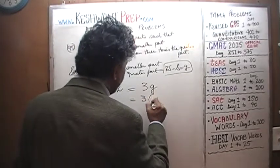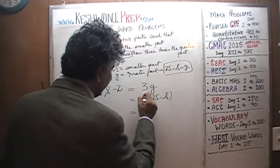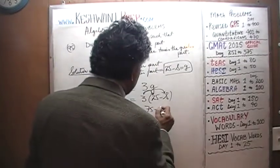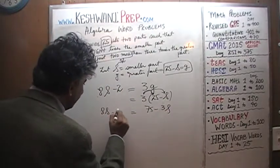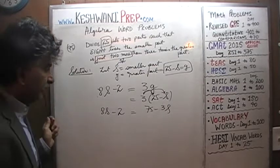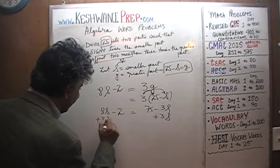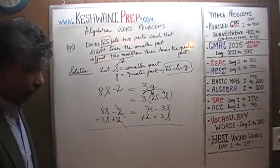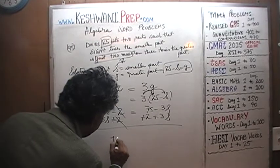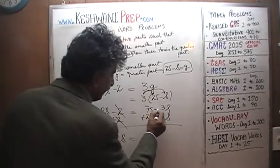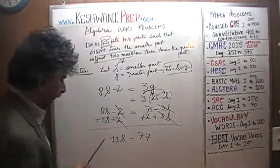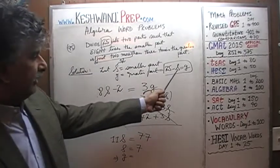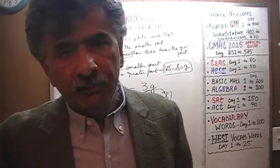So we have 3 times (25 minus S), which opens to 75 minus 3S, and on the other side we have 8S minus 2. Let's bring the 3S to the right side by adding 3S to both sides, and bring the 2 over by adding 2 to both sides. The negative 2 and positive 2 cancel. 8S and 3S give us 11S. The negative 3S drops out and we end up with 77. If 11S equals 77, then S must equal 7. And if S is 7, the greater part must be 25 minus 7, which is 18.